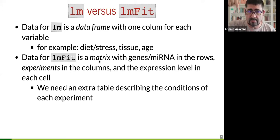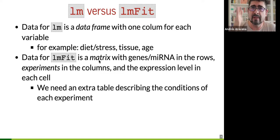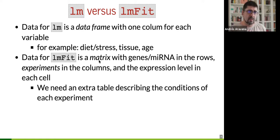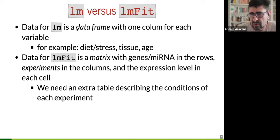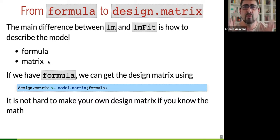In microarrays, each column is one experiment, and you need an extra table called the target table that describes what the conditions are for every experiment. The main difference is that in LM linear models you have a formula for describing the model, and in LMfit you have a matrix. So we have two ways of describing the thing, and I want to talk about how you move from one to the other and what is the meaning.